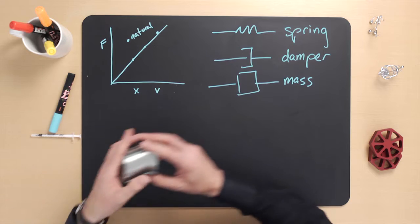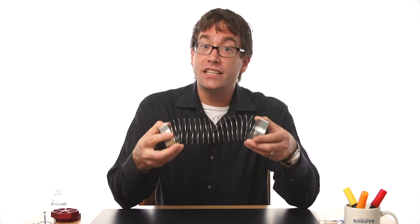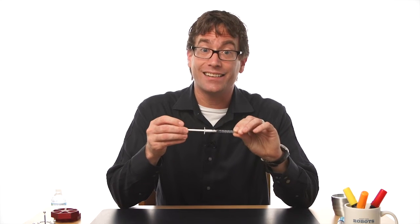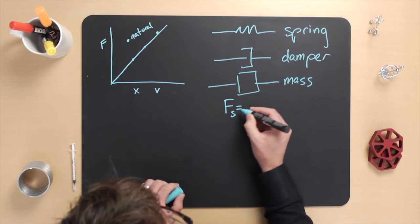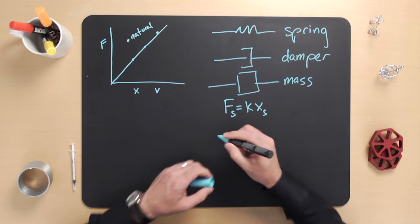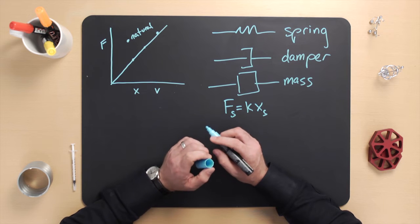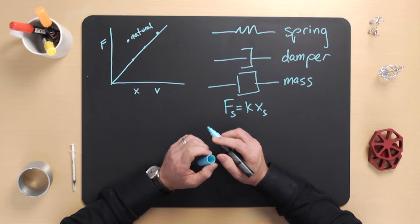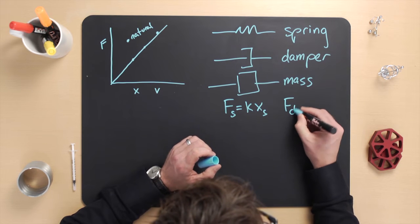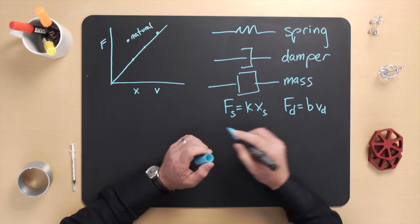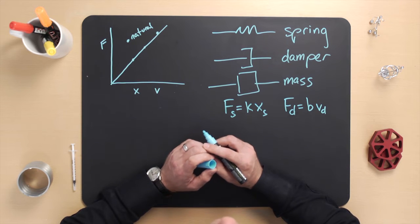Whenever a spring, like this slinky, is in extension, its position x is defined to be positive. Whenever a damper, like this syringe, is extending, its velocity is defined to be positive. The relationship between force and position of a spring is always linear, represented by the constitutive law f sub s equals k times x sub s, where the positive number k is called the spring constant. The relationship between force and velocity of a damper is also always linear, represented by f sub d equals b times v sub d, where the positive number b is called the damping constant.